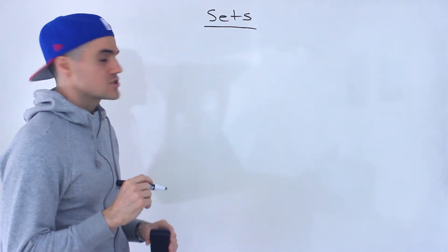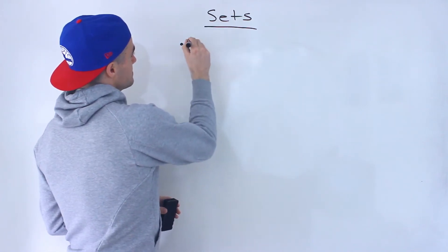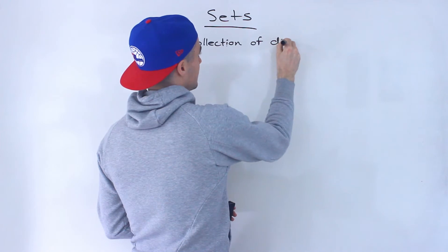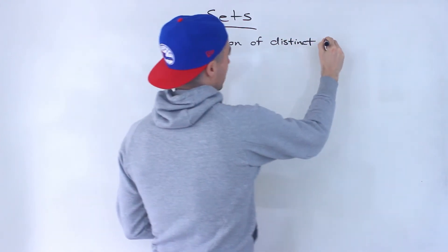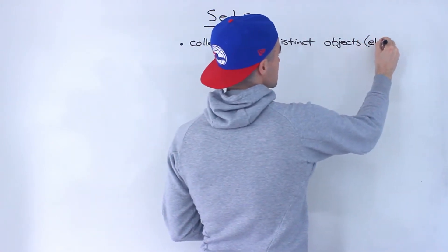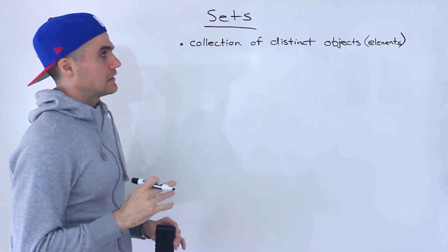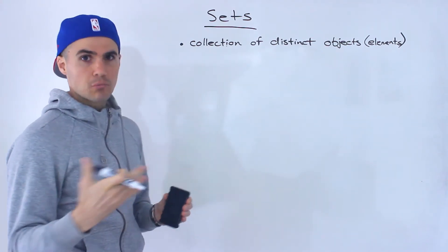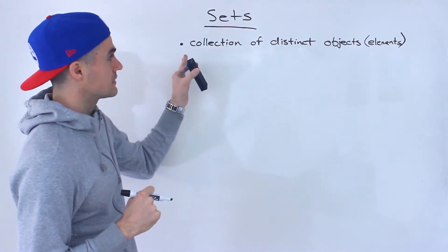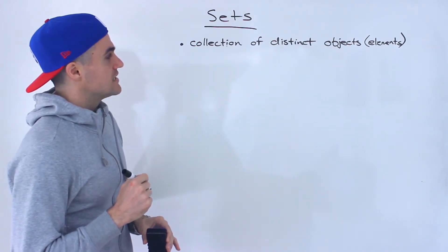To begin, let's start with a definition of what sets are. The way I like to think of sets is basically a collection of distinct objects. Another word for object is basically the elements in a set. It could really be a collection of anything, whether it's certain words or numbers. We're mostly going to be using numbers in this section.